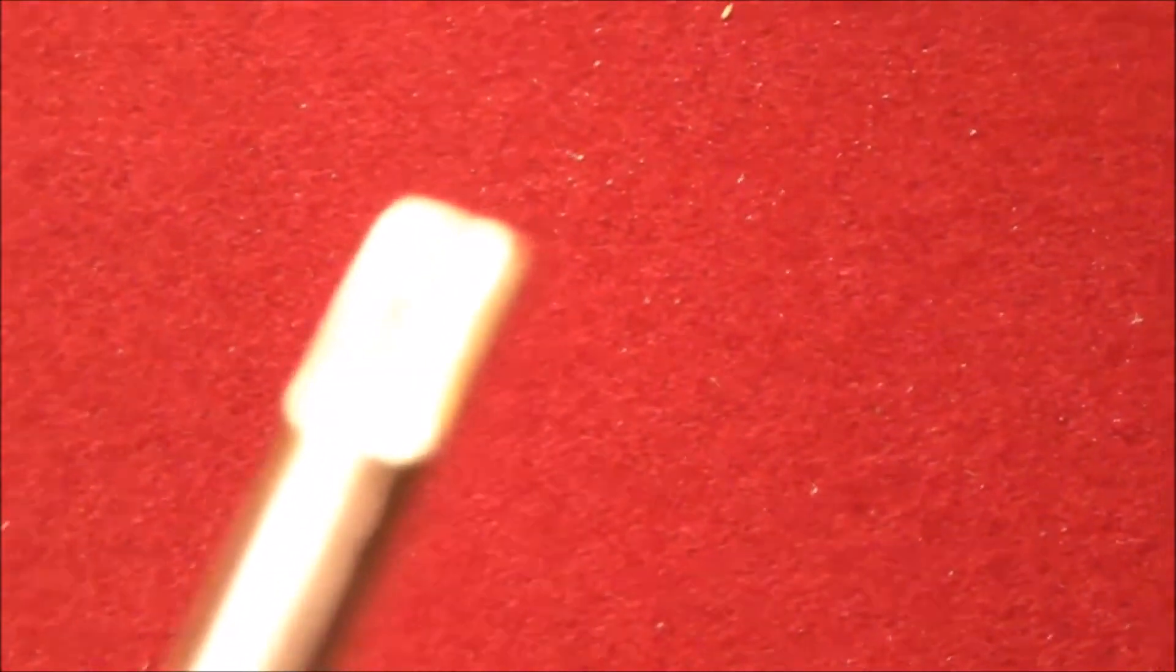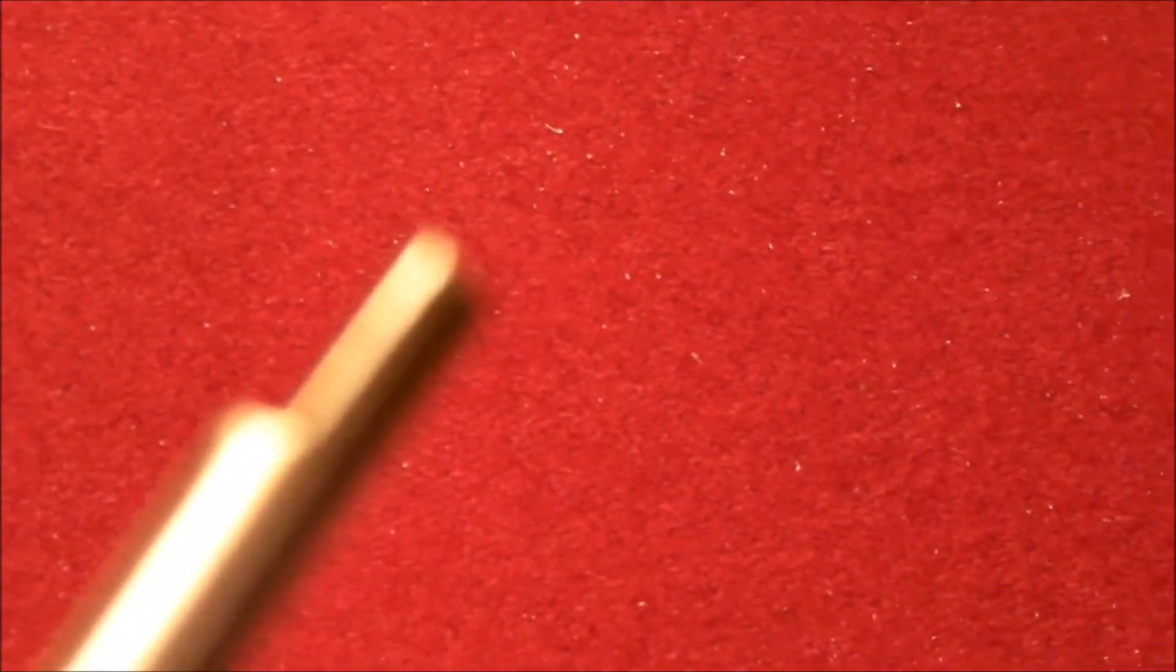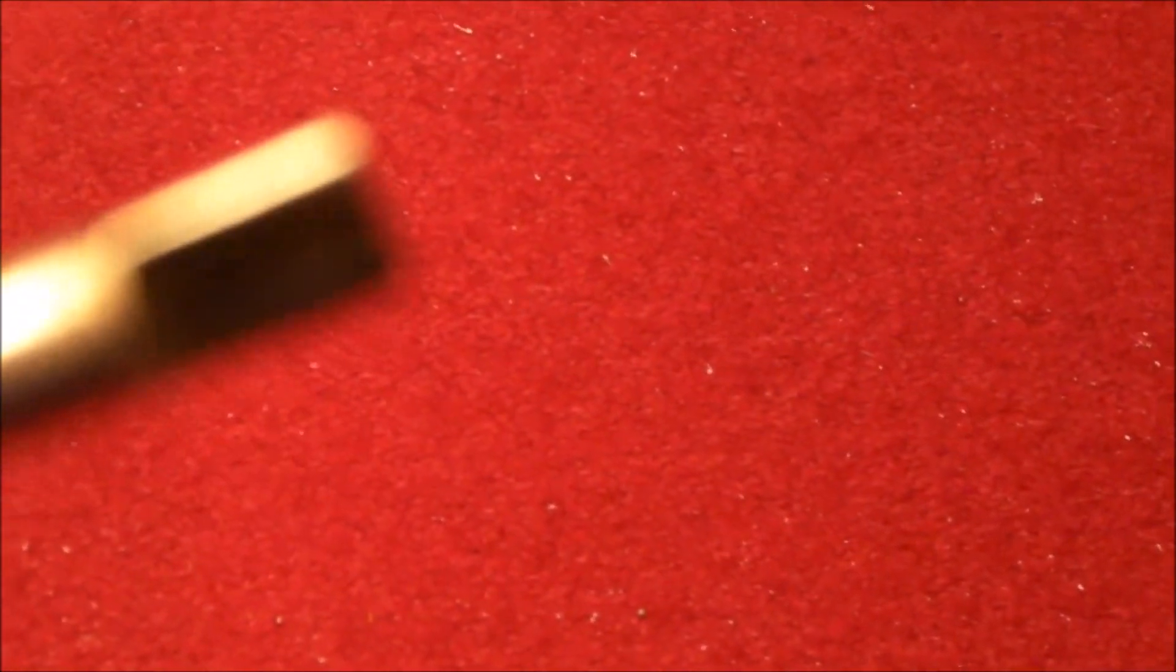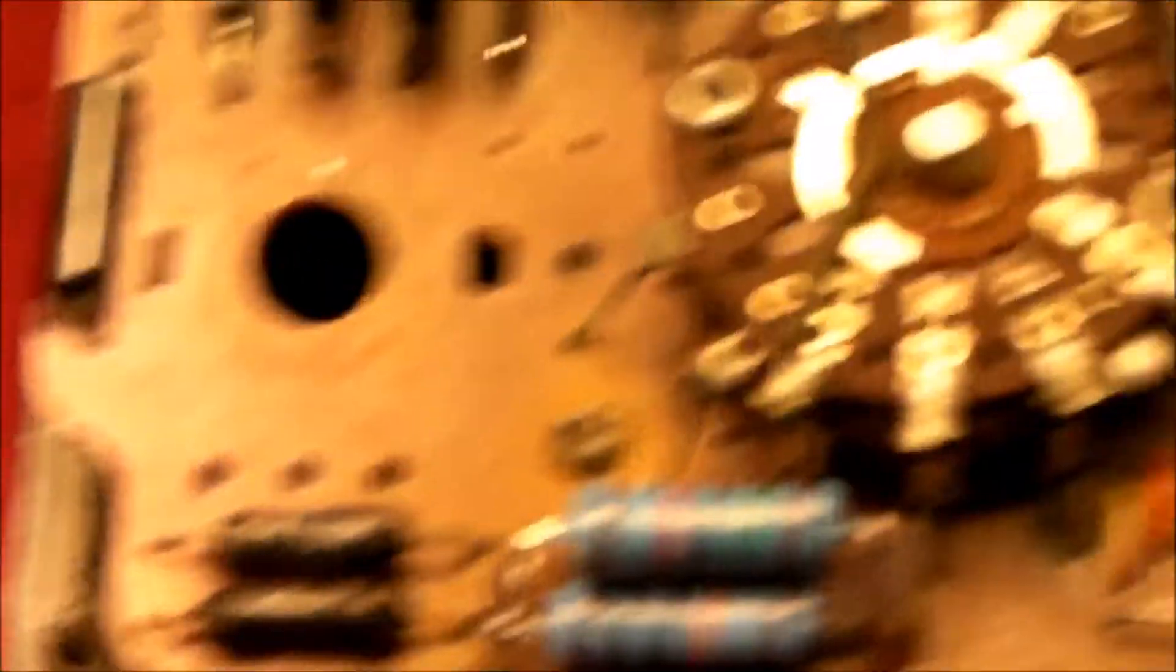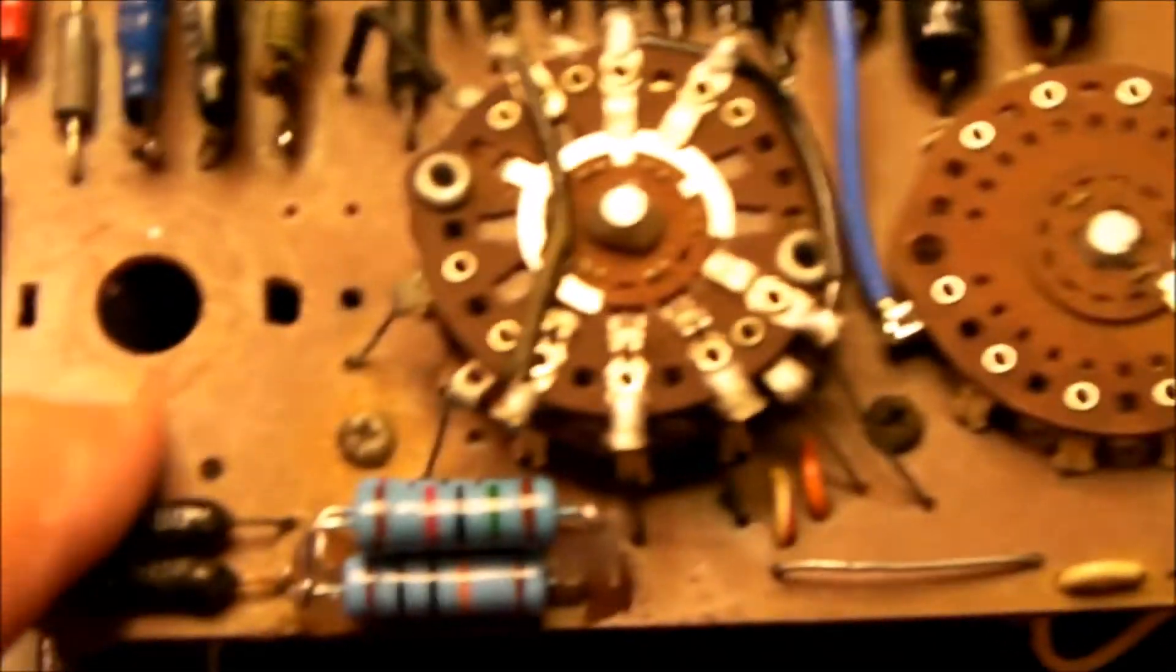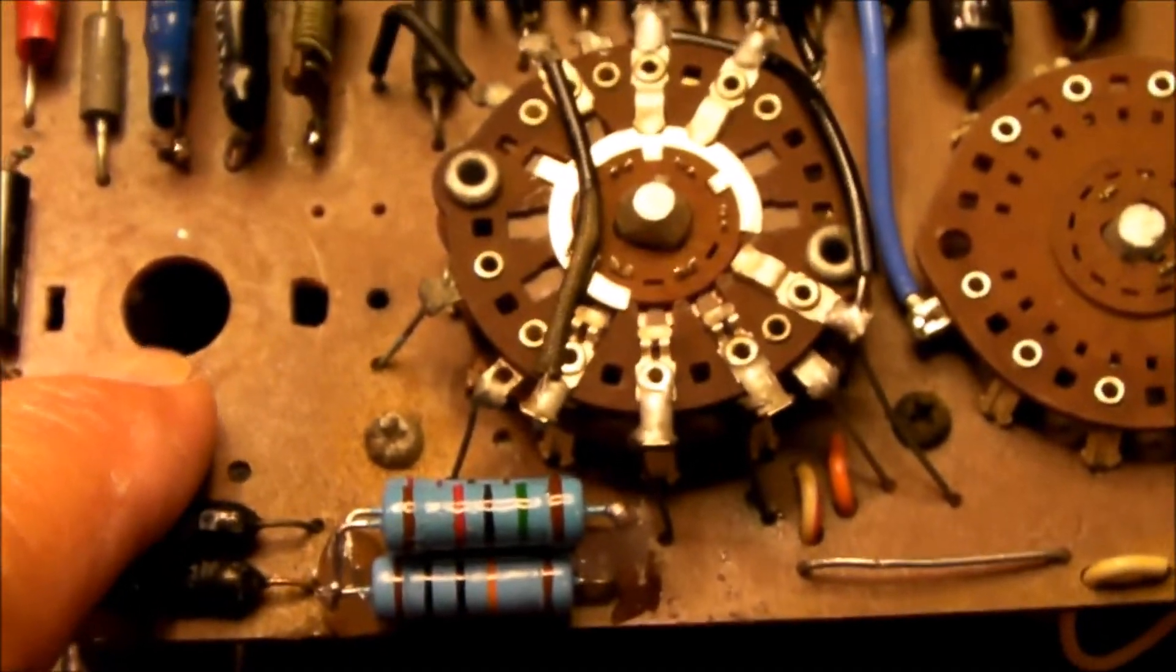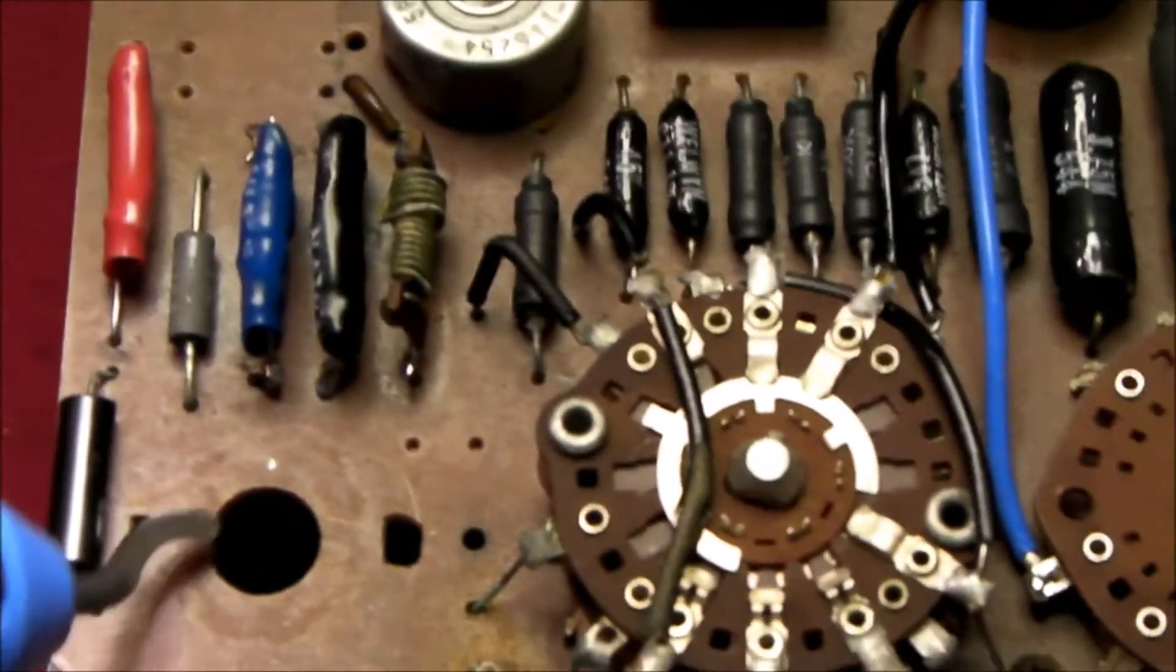This happens to be a 10k ohm potentiometer. I've shortened the shaft by roughly a quarter inch, it was a quarter inch too long, and I've ground a flat into it so that the original knob will fit. That also required me to enlarge this hole just ever so slightly. I just ran my deburring tool inside here.